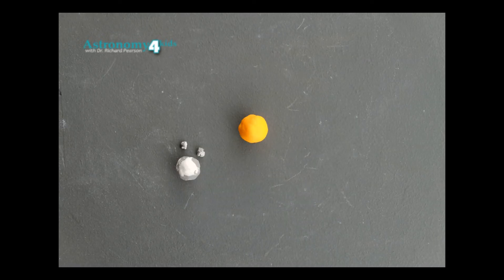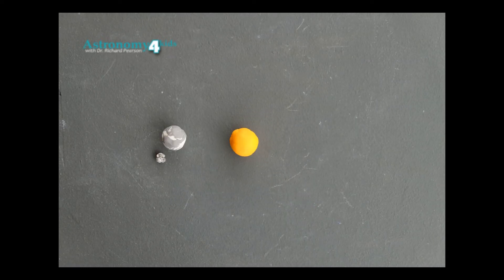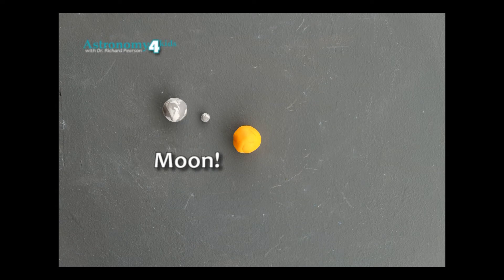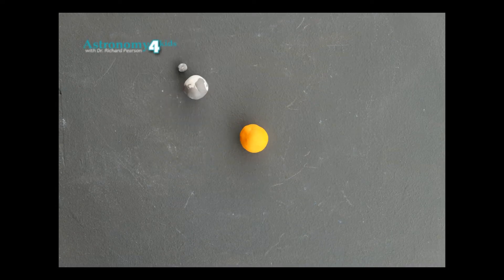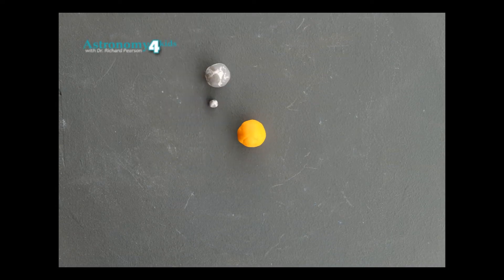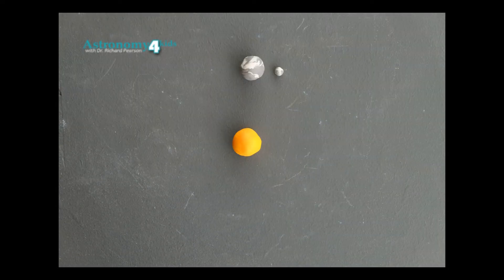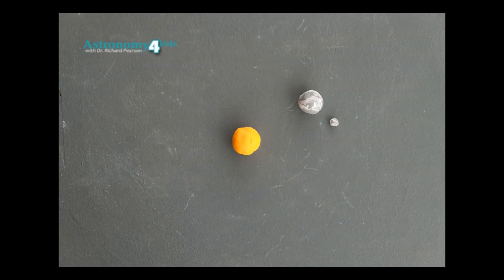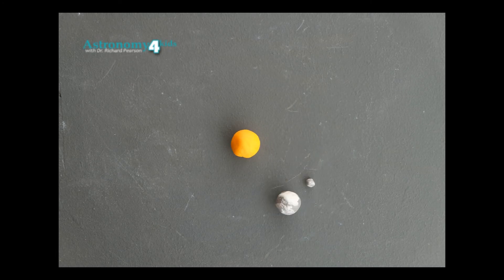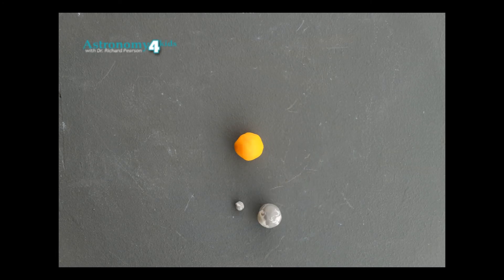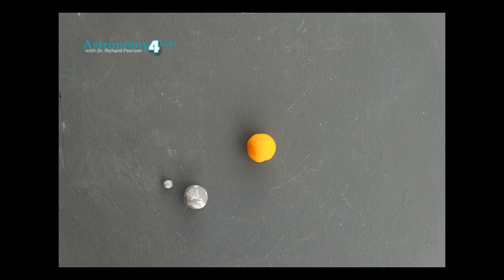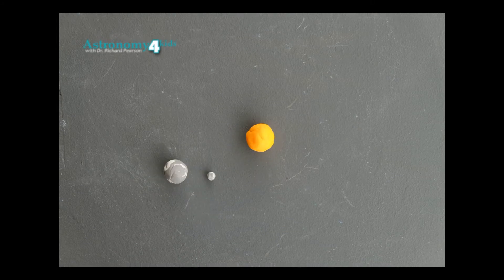Now we know through analysis of moon rocks — the astronauts that went to the moon and brought them back — that the Earth and the moon are made of the same stuff. This collision formation hypothesis is how we explain why.